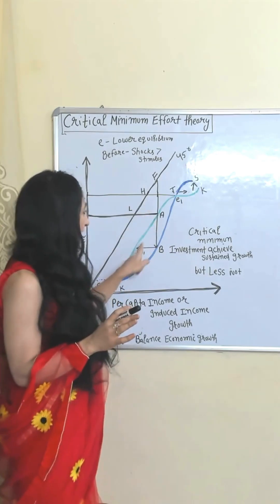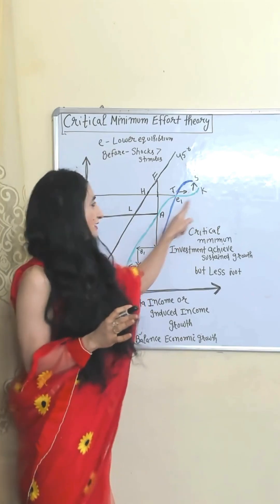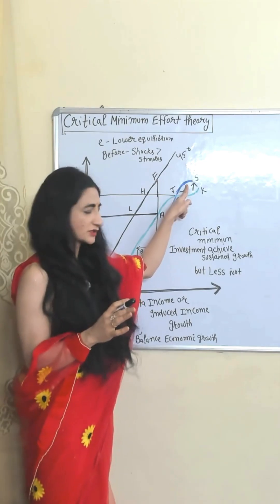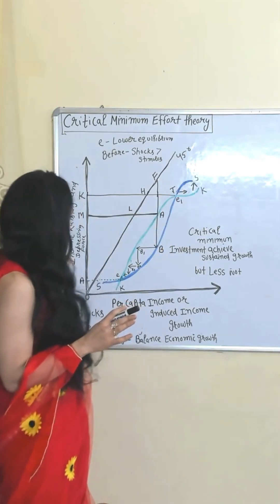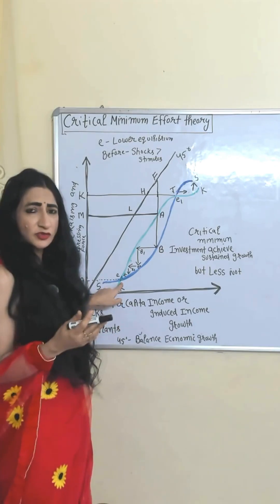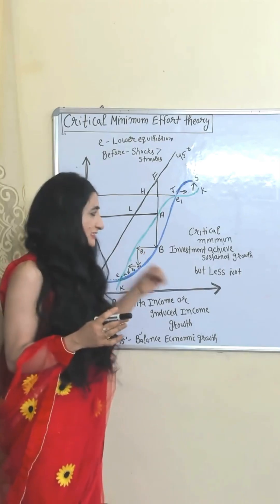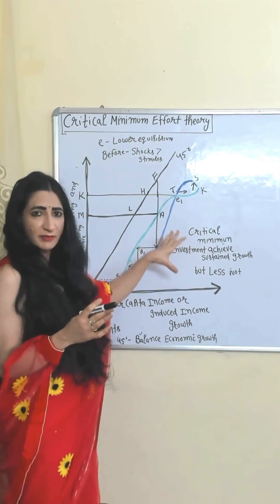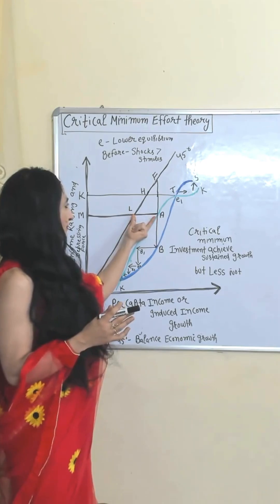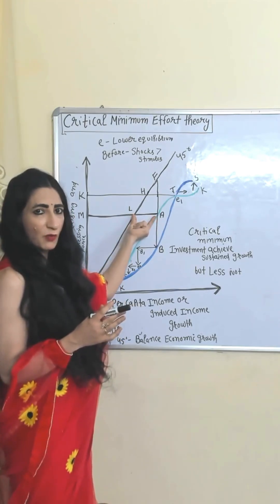This green curve shows the stimulants; this blue curve shows the shocks. Initially, our equilibrium point is E. Now suppose we do investment which is less than the critical minimum — as a result, our per capita income increases a little, but shocks are more than stimulants.